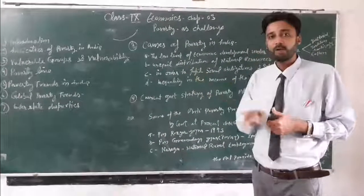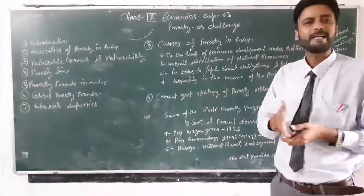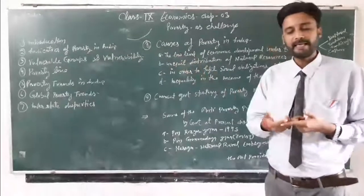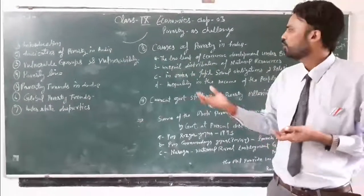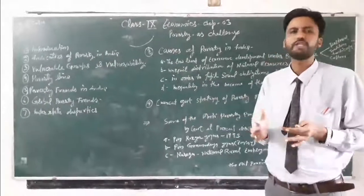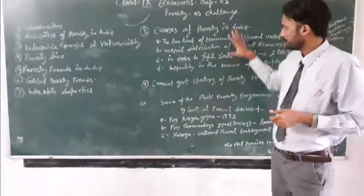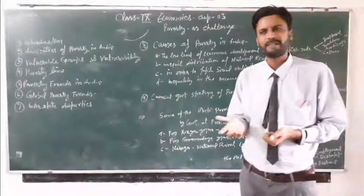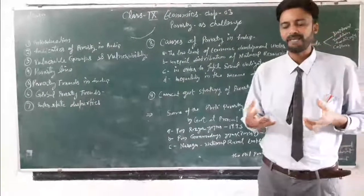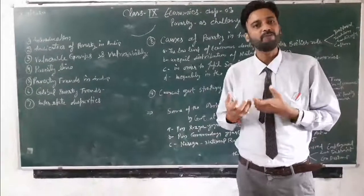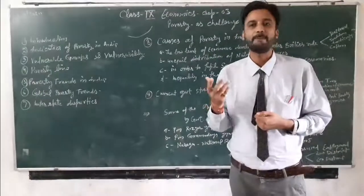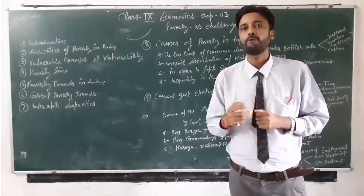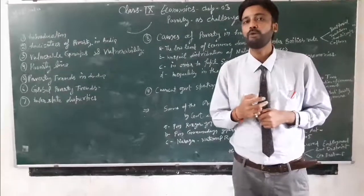Government policies also play a role in income inequality. The MSP — Minimum Support Price — is one such policy. Government policies can affect the income ratio and the difference between rich and poor. These are the main points related to causes of poverty, but there are many more points including poverty and inflation.